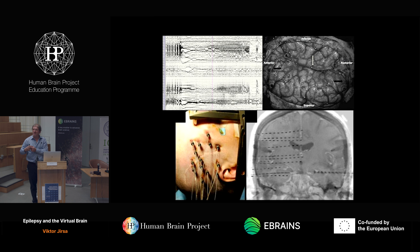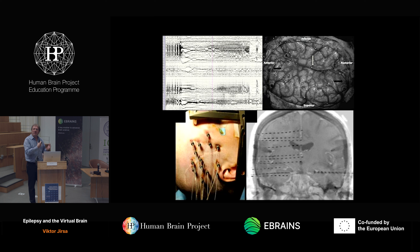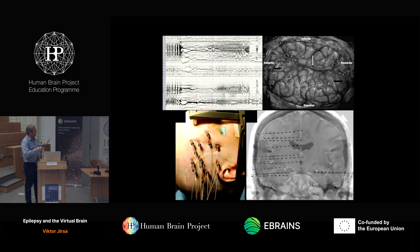Stimulation is something we are working on to develop, but for the majority at the moment, the gold standard is resective surgery. For this, you go into the brain to sample the activity, and you have to do this during a long time, because with scalp EEG, very often you don't capture a seizure. The seizure is the most informative. You go into the brain and if possible also to deeper structures like the hippocampus and amygdala. About 50% of all seizures are temporal lobe seizures.